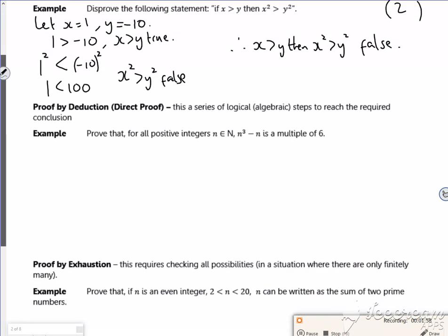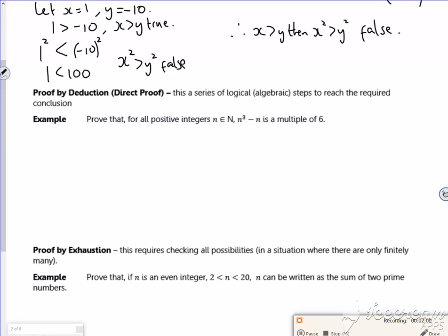Let's look at this one now. This one says algebraic steps, so it would be worth a few more marks, maybe about 3 or 4. Prove that for all positive integers n, n cubed minus n is a multiple of 6.